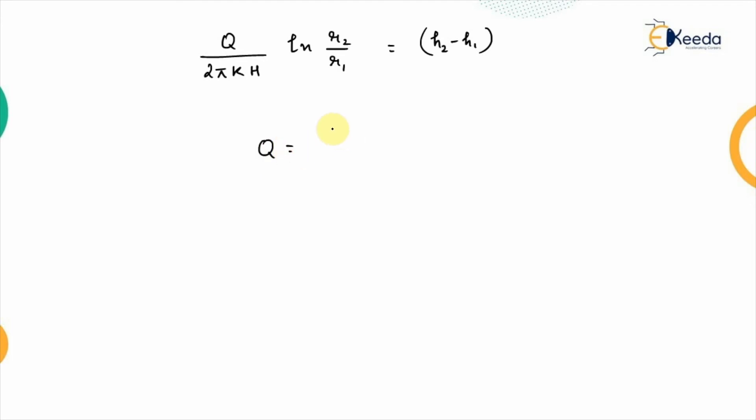So, this q is written as 2πkh into h2 minus h1 upon ln r2 upon r1 this is the one relation that we get for the confined aquifer. This is the equilibrium equation for the steady flow in a confined aquifer.